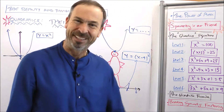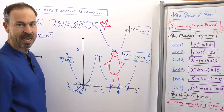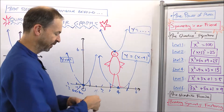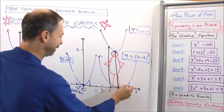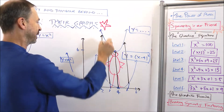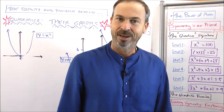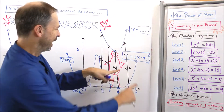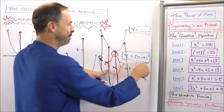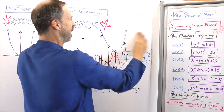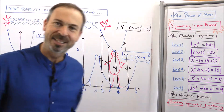Now I've moved the graph over — how do I move the height up? I need every output value to go up by six. I need to add six to all my possible outputs. So let's try y equals x minus four squared plus six. Adding six to everything will make everything six higher.